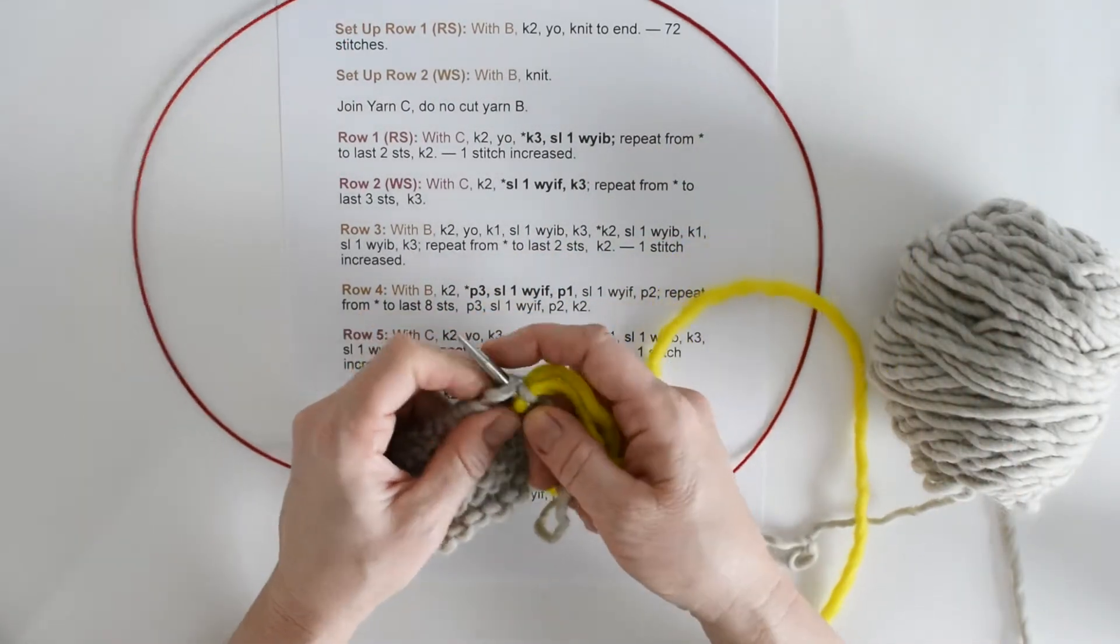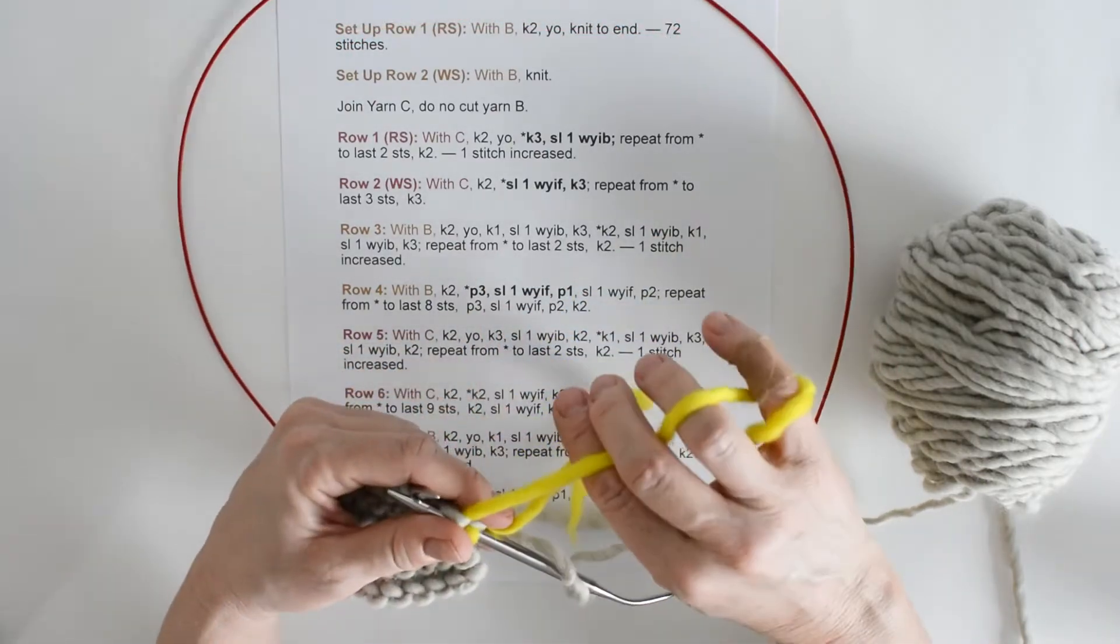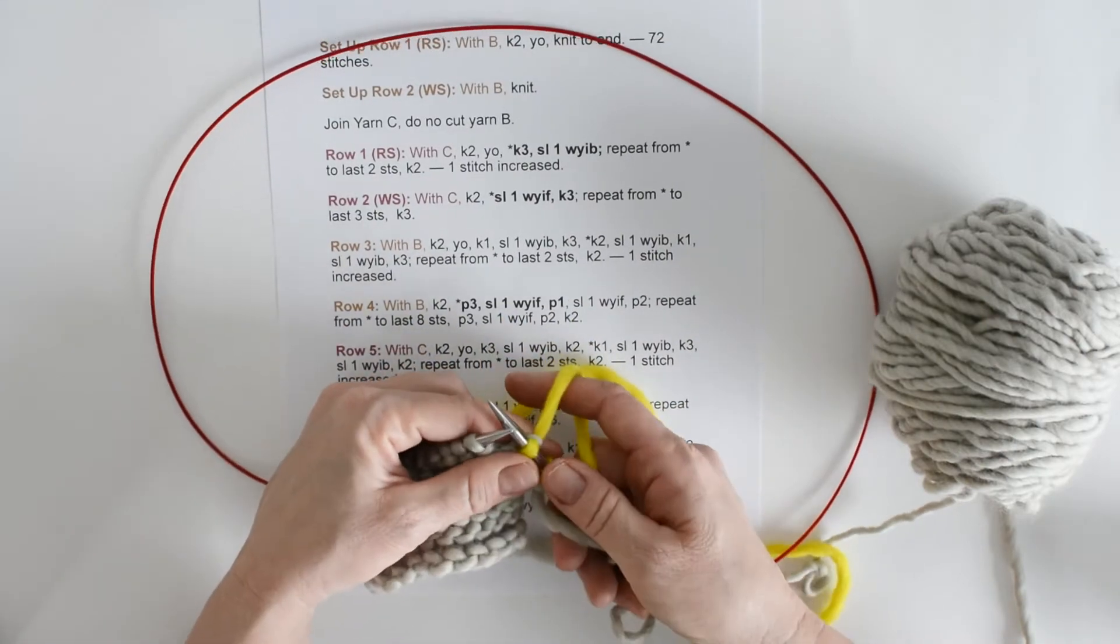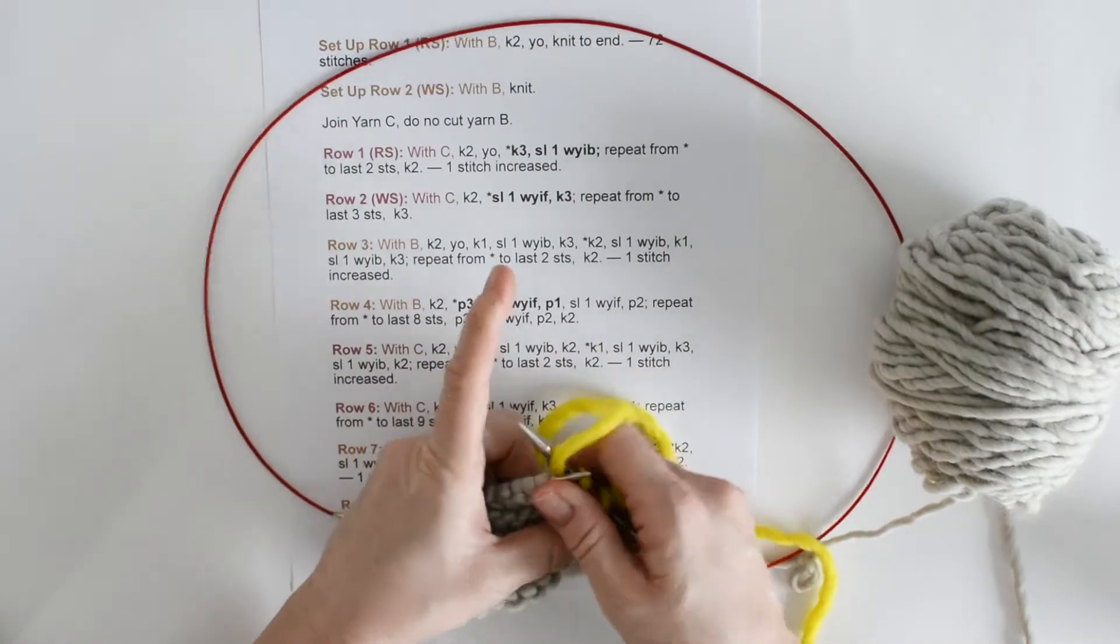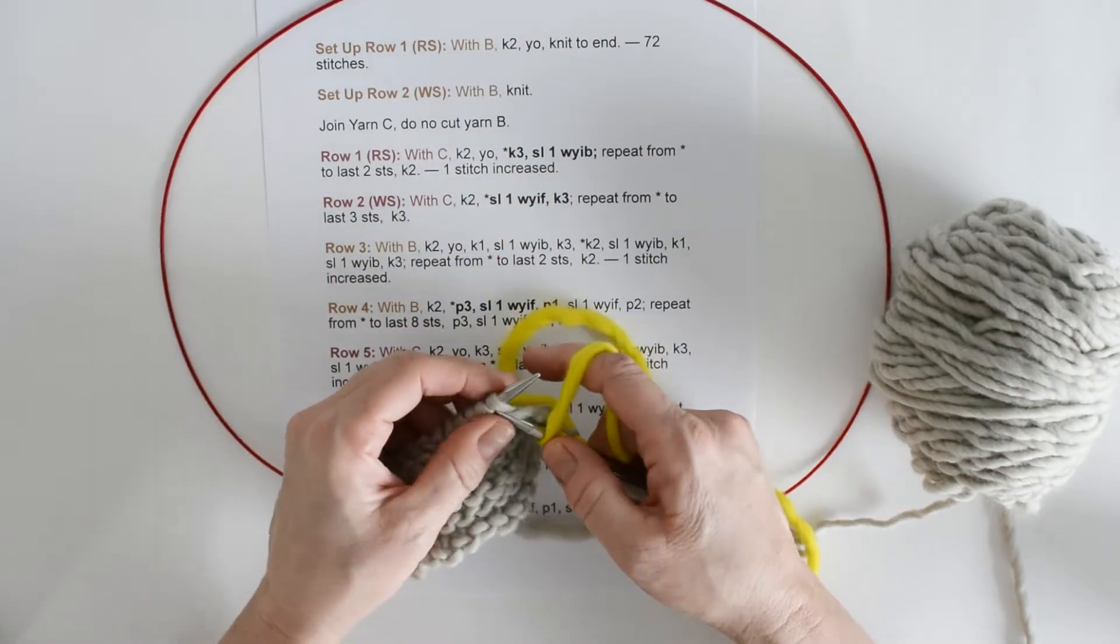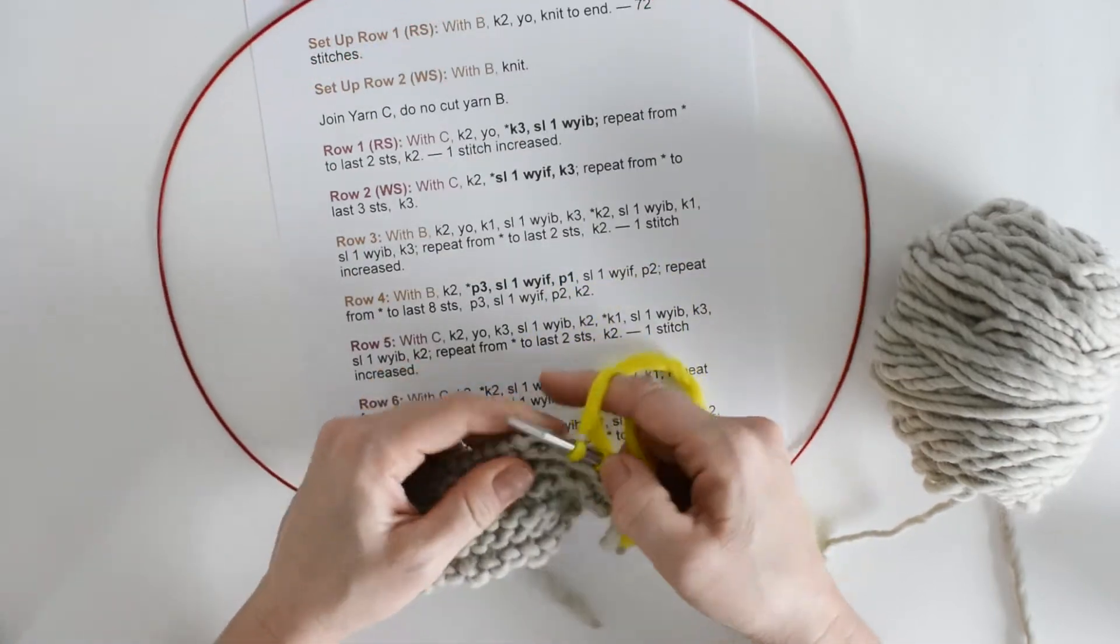We just pick it up and knit it. So there's one stitch knit, and my second stitch knit. Make sure we don't knit with the tail. We all make that mistake now and again. So I've knit my 2, I'm going to yarn over. Then it says, knit 3, slip 1 with yarn in back. So let's do that. Knit 1, 2, 3.